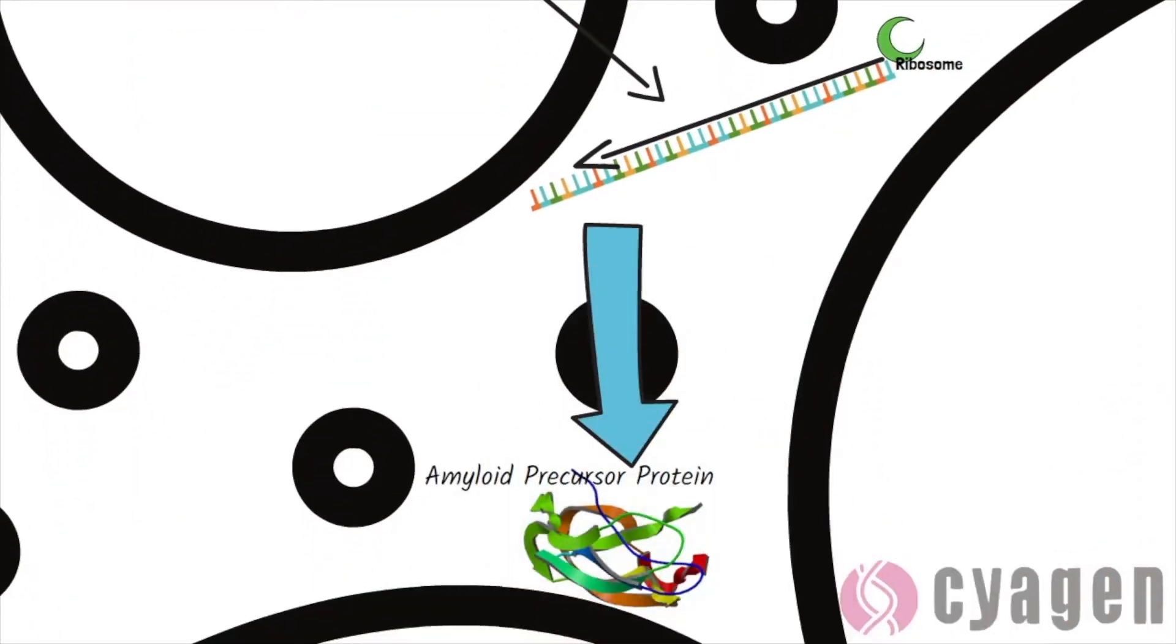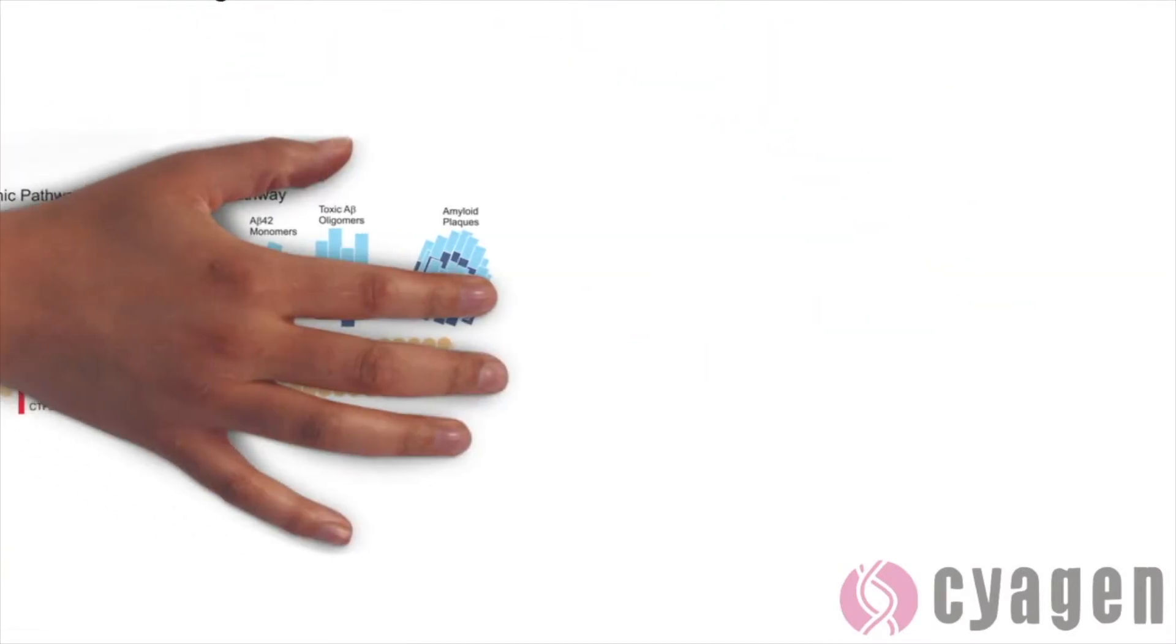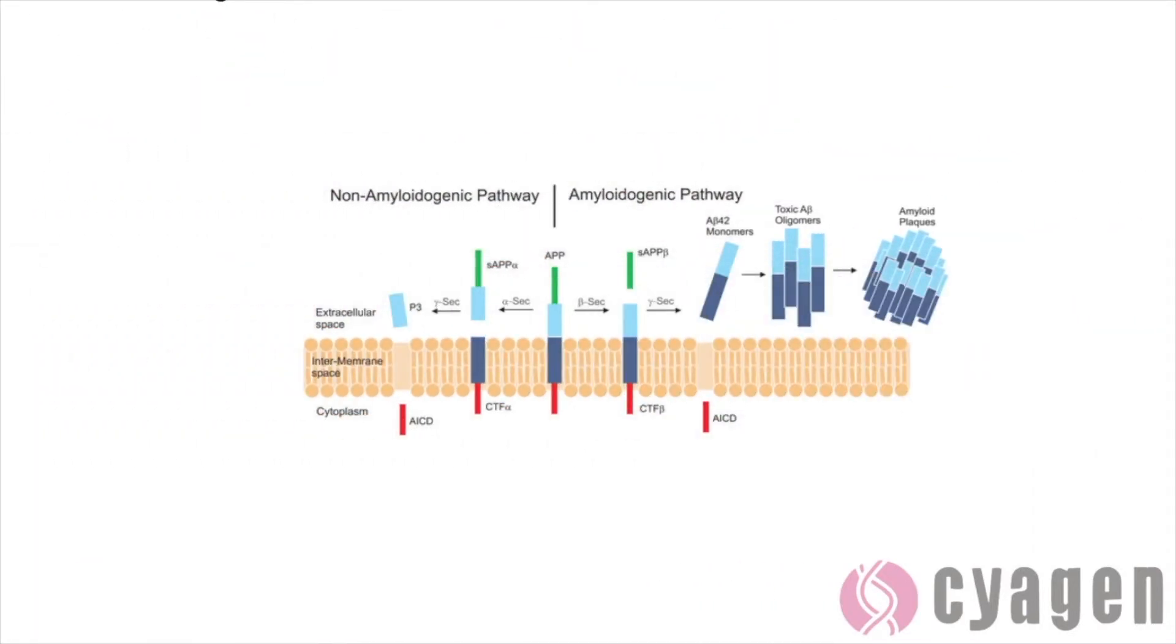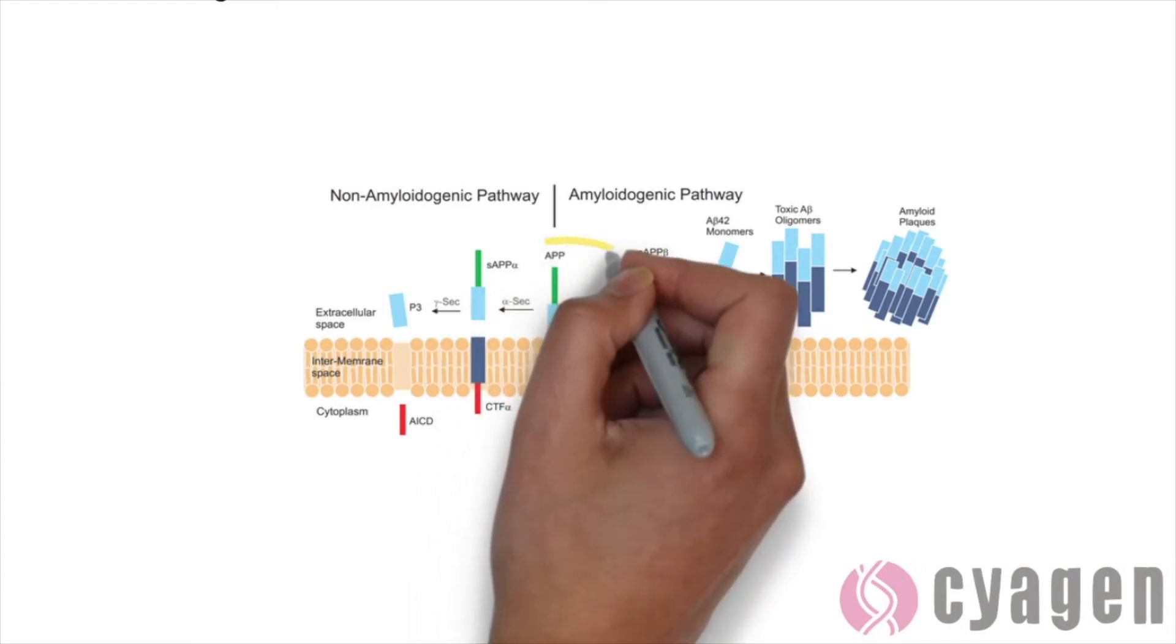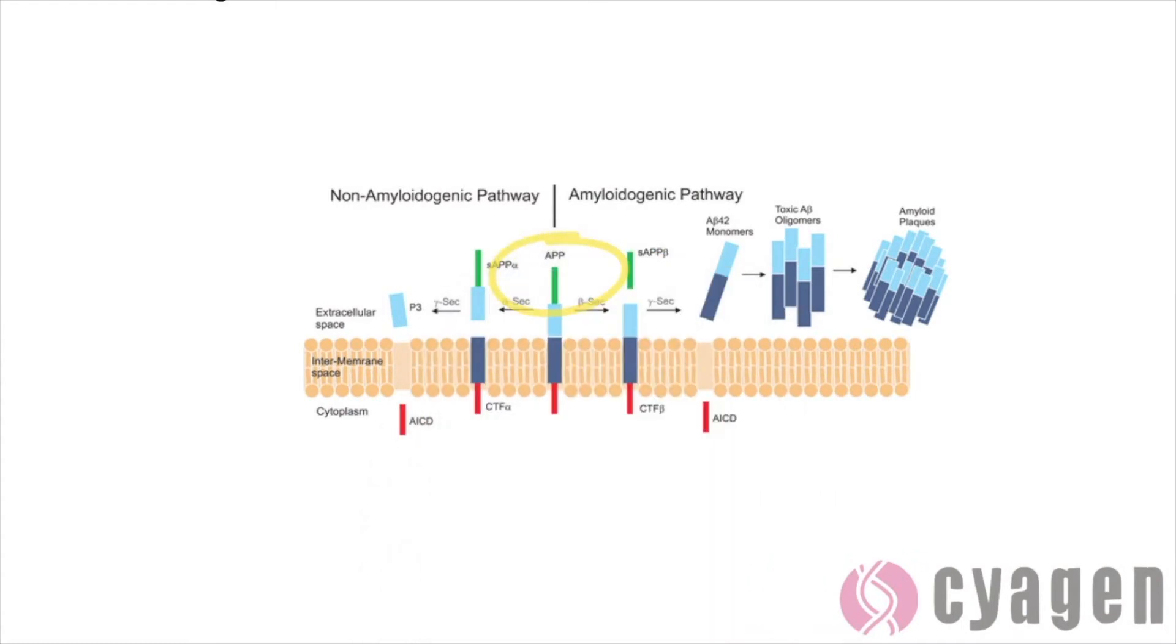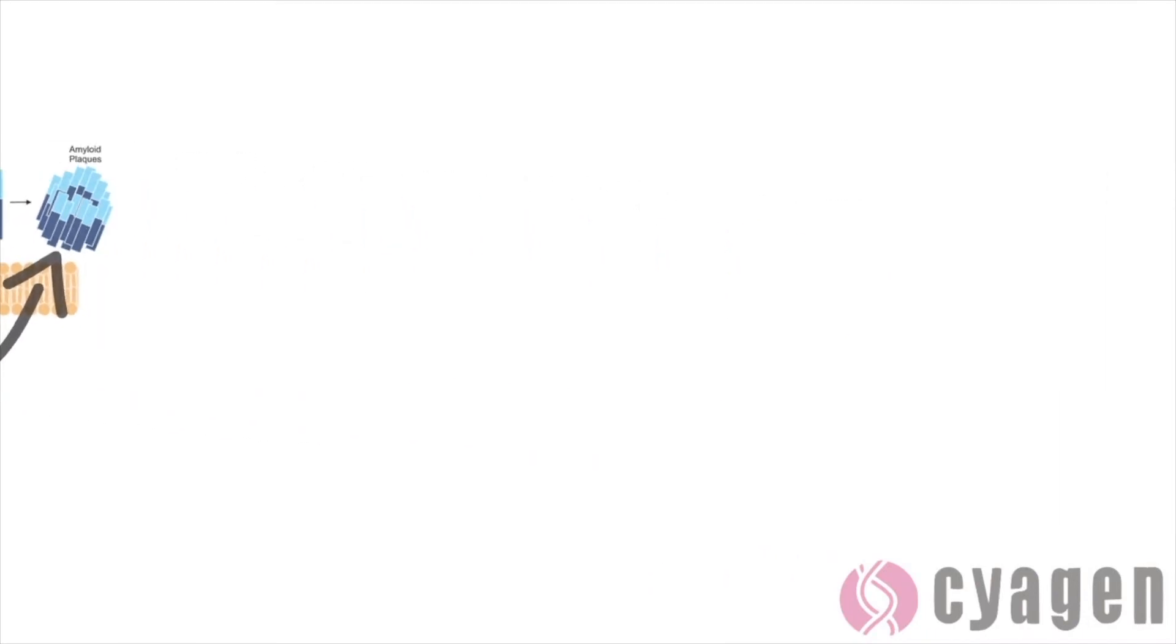This protein plays a role in the production of amyloid beta. Amyloid beta denotes peptides of 36-43 amino acids that are the main component of amyloid plaques found in the brains of people with Alzheimer's disease.